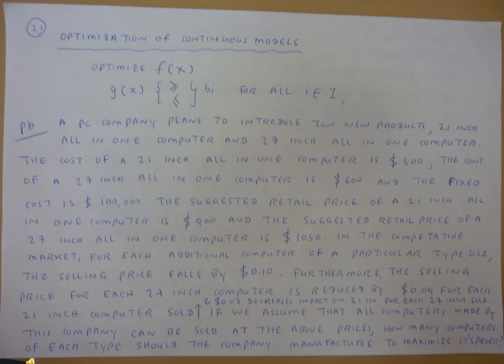A PC company plans to introduce two new products: a 21 inch all-in-one computer and a 27 inch all-in-one computer. The cost of a 21 inch all-in-one computer is $500.